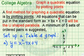All equations that can be put in the standard form ax²+bx+c=0 will be the U-shaped parabola. A minimum of five sets of ordered pairs is usually suggested.